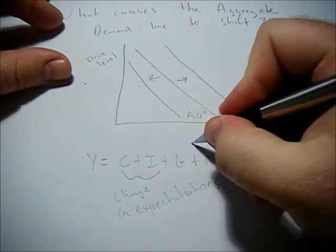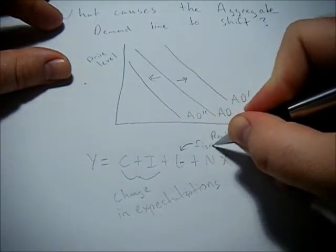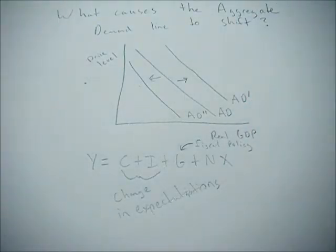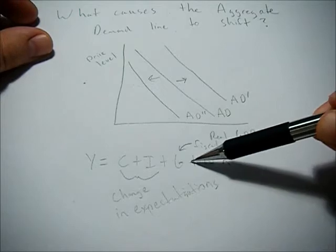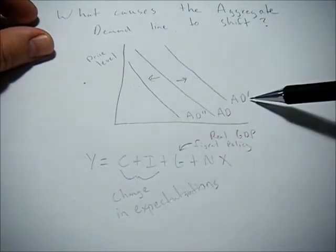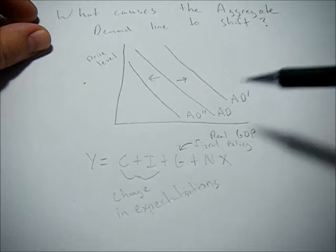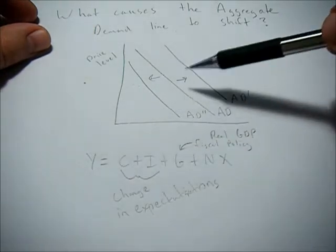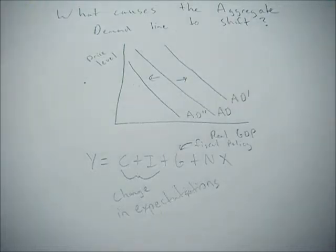For G, this could be fiscal policy, or a change in government policy. An increase in G is going to cause Y to increase, aggregate demand increases or shifts right. They cut fiscal policy, G goes down, Y goes down, aggregate demand shifts left.